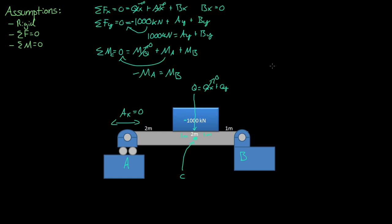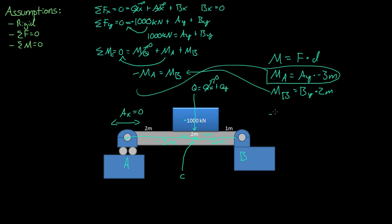Remember that moments equal the perpendicular force times the lever arm distance. So the moment for A equals the distance, which is negative 3 meters, so Ay times negative 3 meters. The moment for B equals By times 2 meters. So if we plug these into the equation,